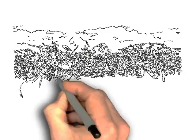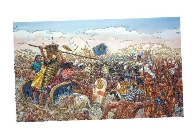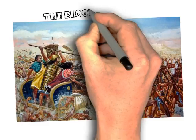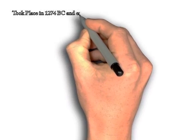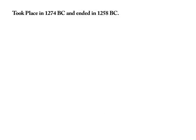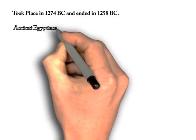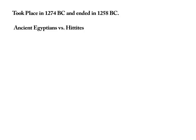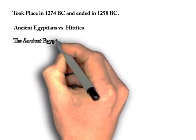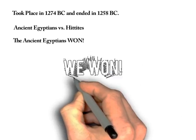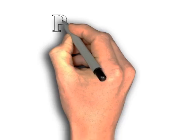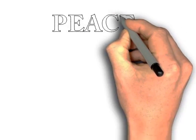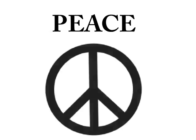Significant historical event: The Battle of Kadesh. The Battle of Kadesh was fought between the Egyptians and the Hittites. It took place in 1274 BC on the edge of the Orontes River, and ended in 1258 BC when the very first peace treaty in history was made. They went to war over who would take over the land of Kadesh. The Hittites first owned it, but the Egyptians had victory and took over. The battle ended up being a huge and very bloody war, and its significance was the creation of the very first peace treaty in history.